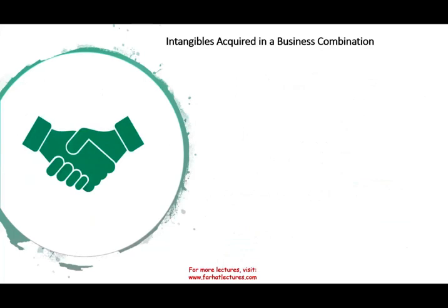Let's talk about intangible assets acquired in a business combination. That's when you buy another company — you buy all their assets and all their liabilities. Since intangible assets are assets, when you buy a company you might buy their intangible assets. But what could also be the case is there are intangible assets for the company you purchased that the company doesn't have on their books.